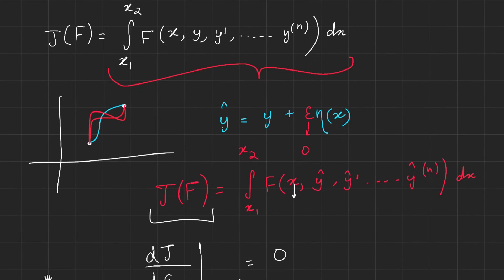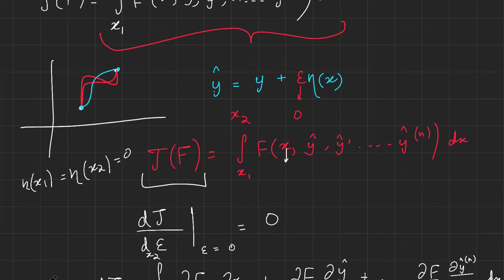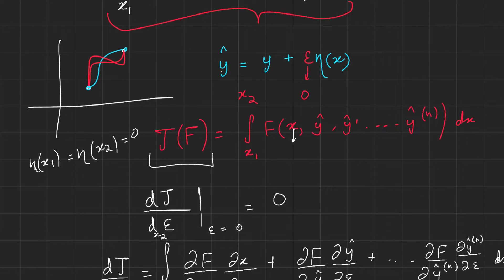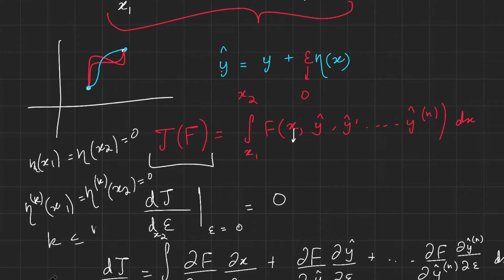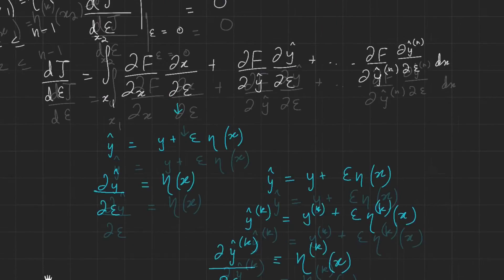Here is a very important part. Our variation must pass through the two endpoints, so it must equal y at x₁ and x₂, hence η(x₁) = η(x₂) = 0. We also apply n − 1 more boundary conditions, standard in the calculus of variations: η⁽ᵏ⁾(x₁) = η⁽ᵏ⁾(x₂) = 0 for k = 0, 1, …, n − 1. So η, η′, η″, and so on up to η⁽ⁿ⁻¹⁾ all vanish at the endpoints.